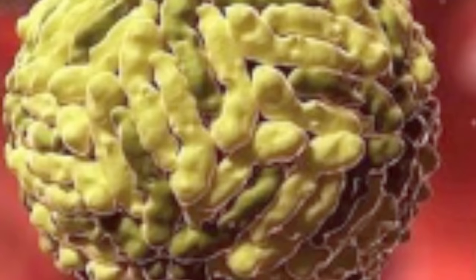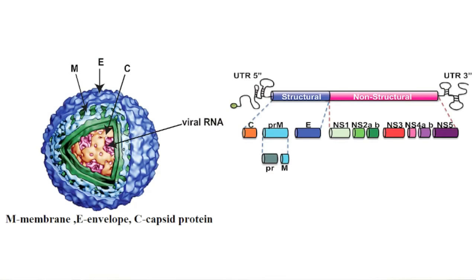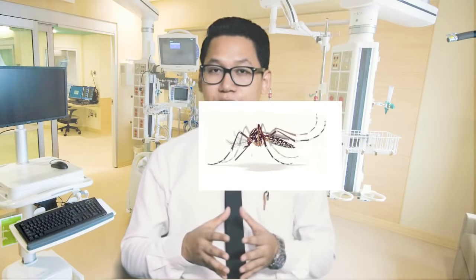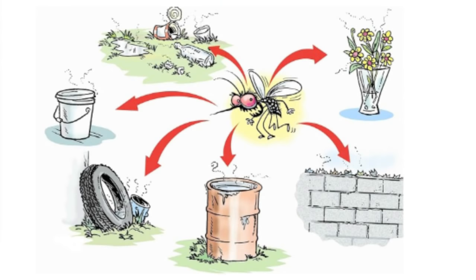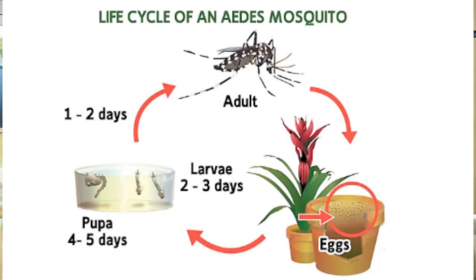Dengue fever is caused by the dengue virus, which is a single-stranded RNA virus about 50 nanometers in size. There are five strains or serotypes of this virus. The dengue virus is transmitted by the female Aedes mosquito, and in India, Aedes aegypti is the main vector. They typically bite during early morning and in the evening, and lay their eggs in artificial water collections like flower pots, coolers, and buckets.